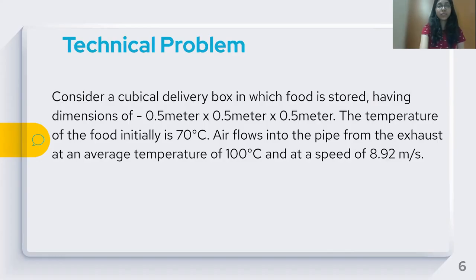In our problem statement, we have considered a cubical delivery box in which food is stored. The dimensions of the box are 0.5 meters by 0.5 meters by 0.5 meters. The initial temperature of the food is 70°C, which is generally the temperature after cooking. The average temperature of the exhaust that flows inside the box is approximately 100°C and the speed at which it enters the box is approximately 8.92 meters per second.